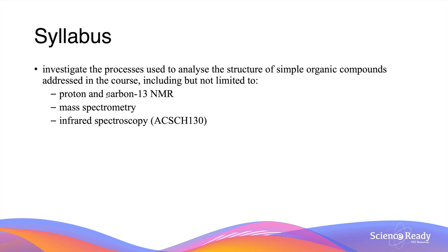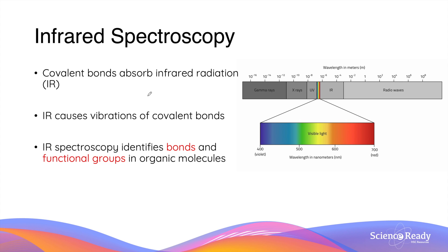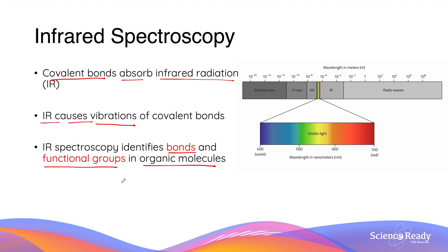This video will be on infrared spectroscopy. Infrared spectroscopy relies on the interaction between covalent bonds and infrared radiation. Specifically, covalent bonds have the ability to absorb infrared radiation. Upon absorption, infrared causes covalent bonds to vibrate. This interaction allows this technique to identify different bonds and functional groups in various organic compounds.